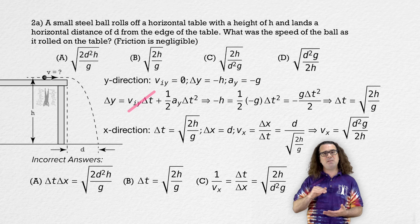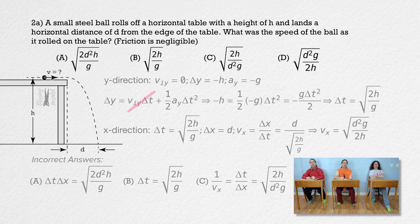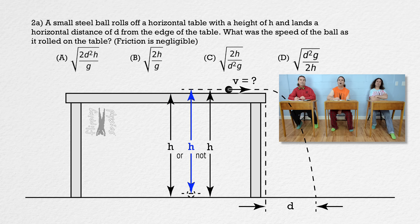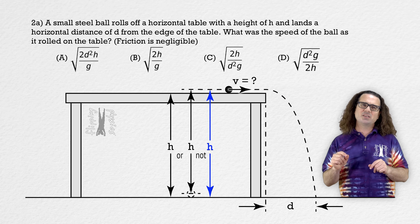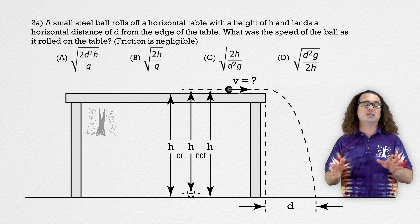Please notice that the three incorrect choices match mistakes you might make: choice A is change in time times displacement, choice B is just change in time, and choice C is change in time over displacement. Please be careful — the AP Physics 1 exam will likely have multiple choices where incorrect answer choices match mistakes you might make. Also note that the height h is labeled incorrectly in the diagram: it should go from the top of the ground to the top of the table, or from the center of mass of the ball on the ground to the center of mass of the ball on the table. You can expect small mistakes like this on the AP exam, so do not let it get to you — just move on.